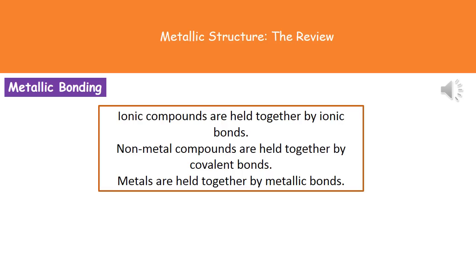So in this topic what we've done is we had a look at a few different ways that different chemicals are held together. So when we had a look at our ionic compounds we found out that they were held together by ionic bonds. Our non-metal compounds are held together by covalent bonds. And now thinking about a metal they're held together by metallic bonds. So quite a logical name there.